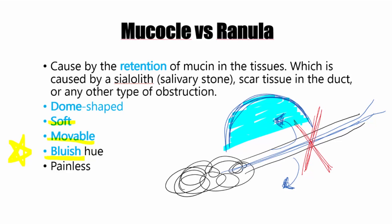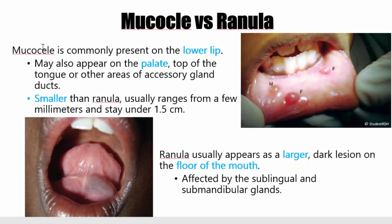Now let's look at why they're different. A mucocele is on the lower lip usually, though it can be on other areas where there are accessory gland ducts, such as the palate or the tongue. But most of the time on the exam, they would use the keyword lower lip. They're also smaller — a few 0.5 cm.